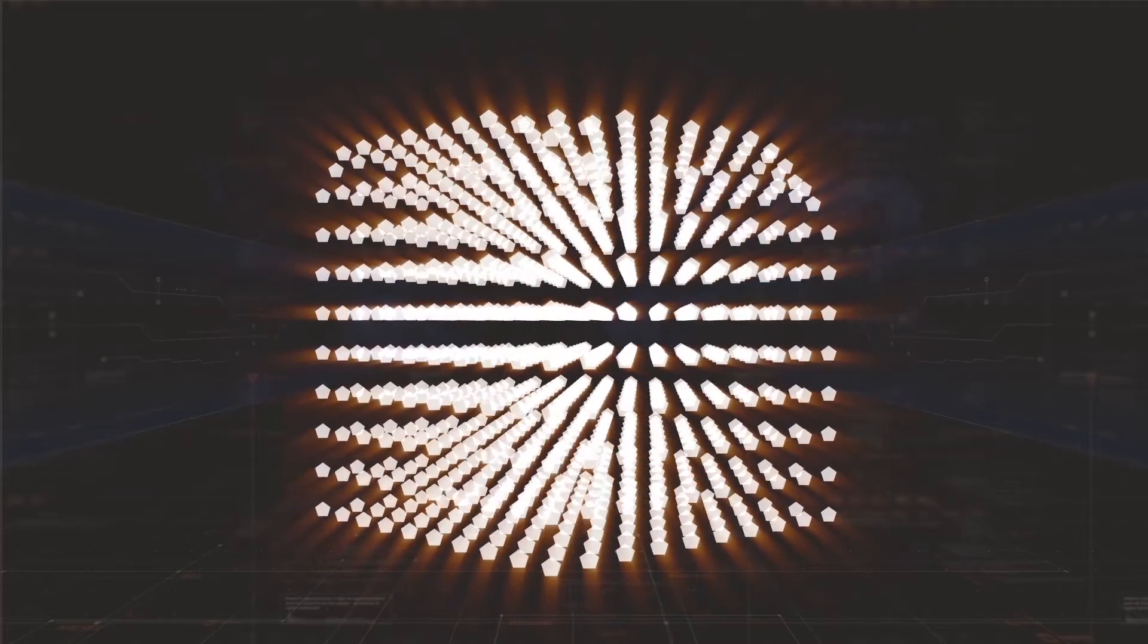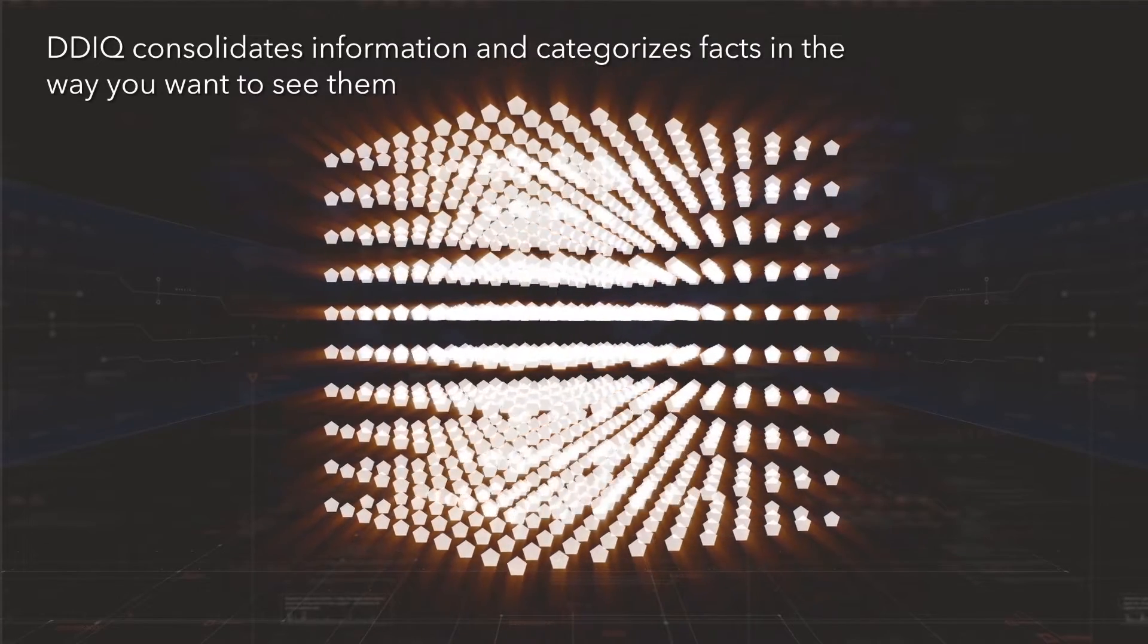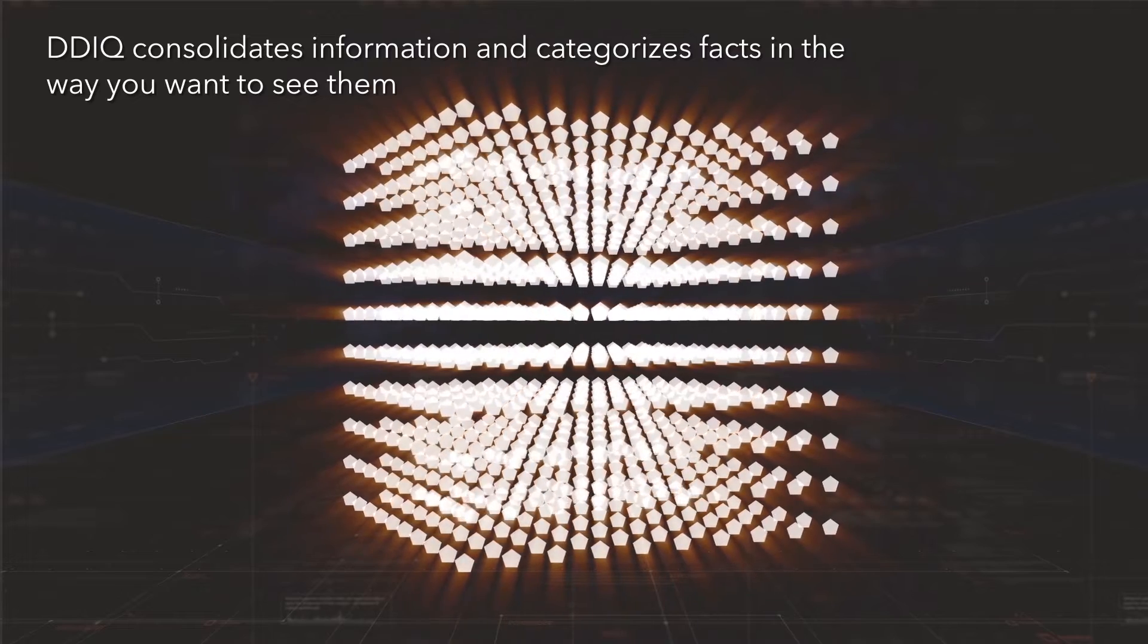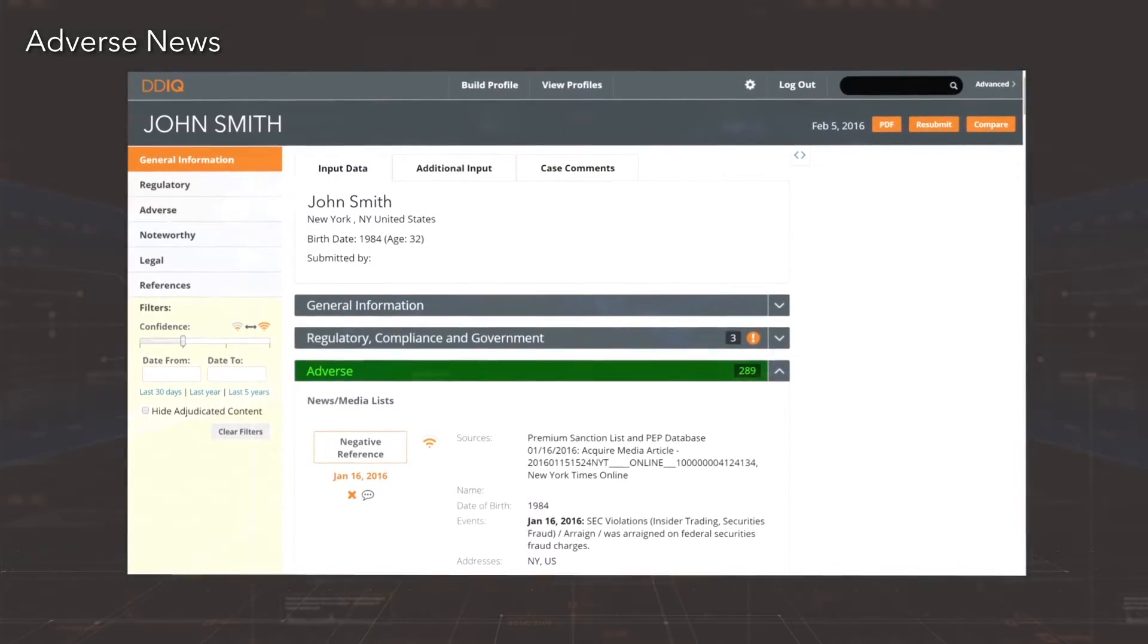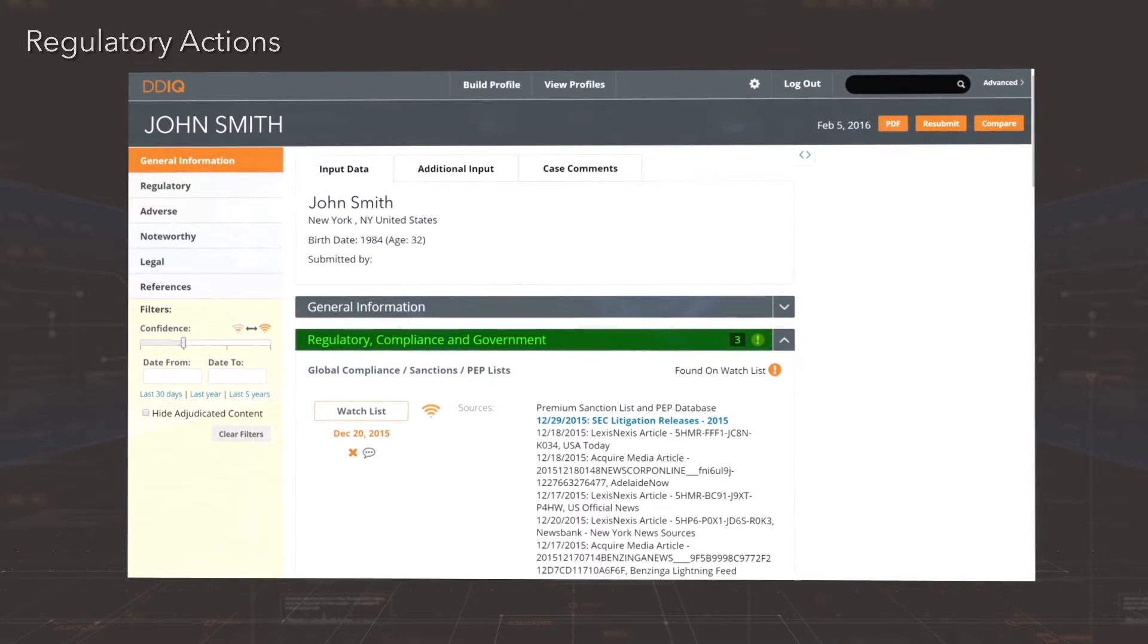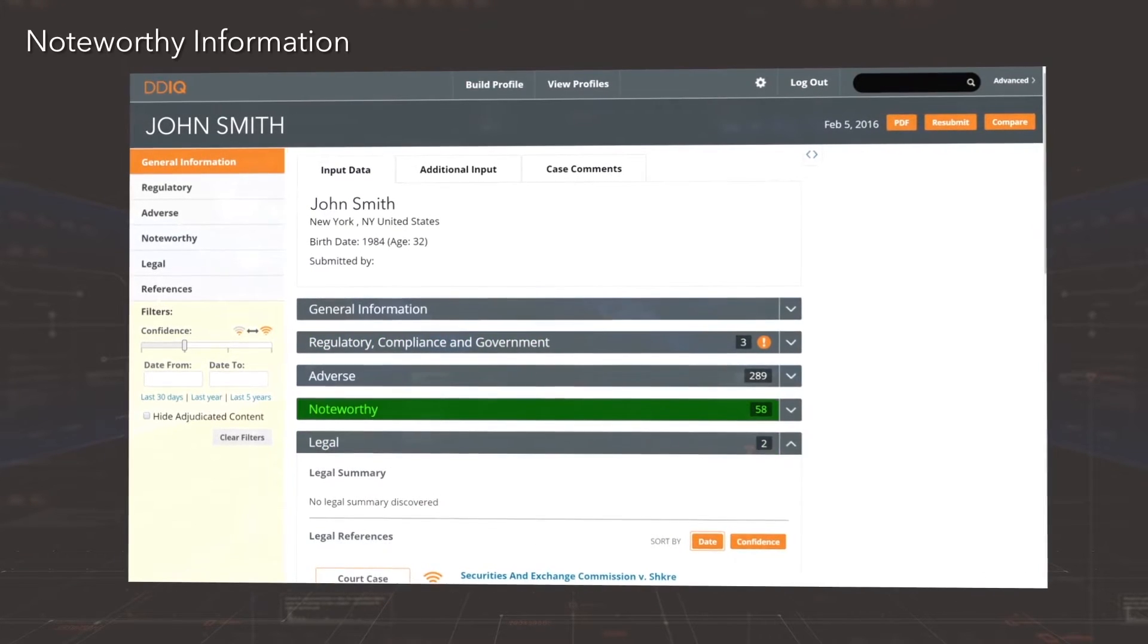A mountain of output isn't helpful. So DDIQ consolidates information and categorizes facts in the way you want to see them: company information, adverse news and events, regulatory actions, legal cases, and noteworthy or reference information.